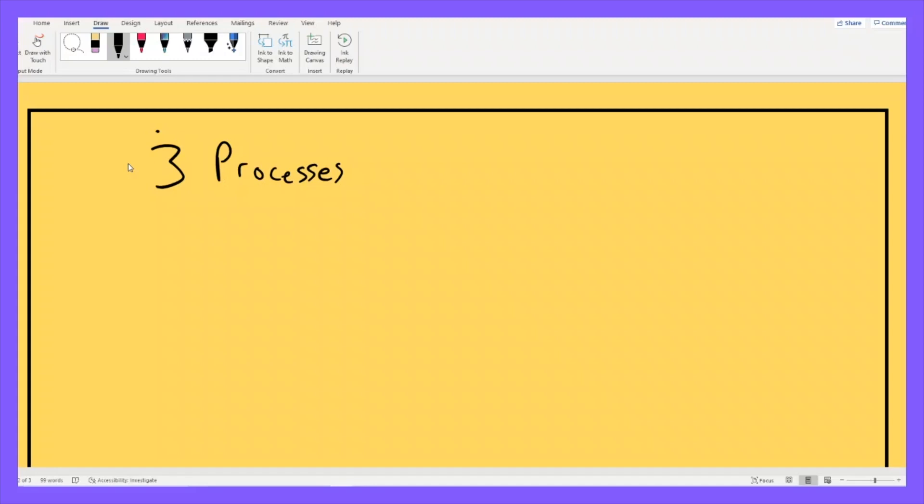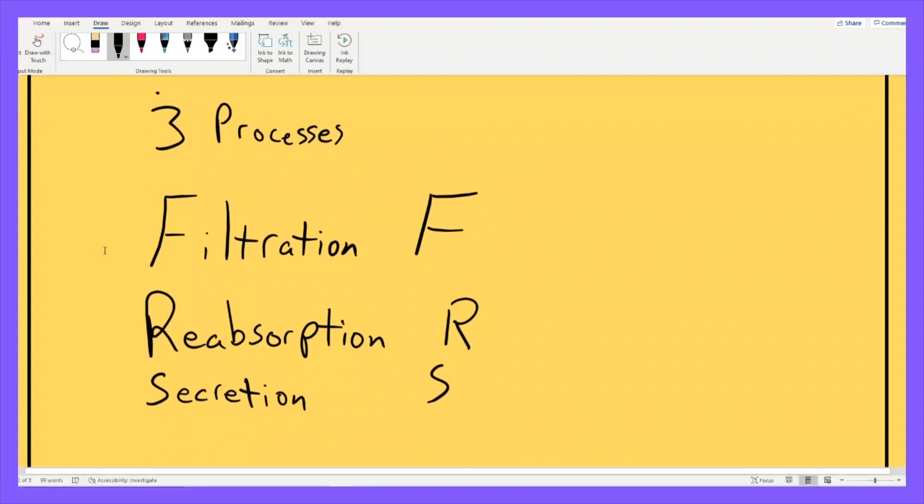We have, first, filtration, represented by capital F. Then we have reabsorption, of course a capital R for that one. And secretion with an S. Filtration, reabsorption, and secretion. Those are the three processes that take place in each and every one of these nephrons.